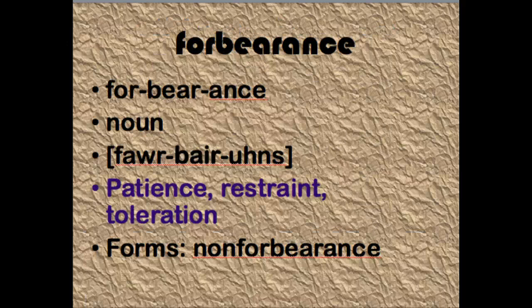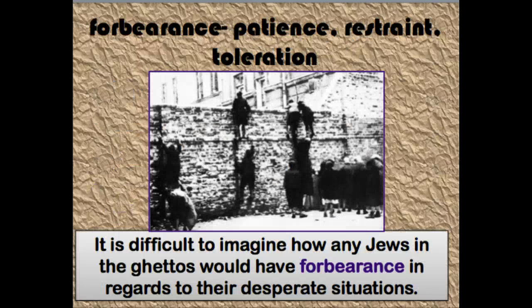Our third word is forbearance. Someone with forbearance has patience and great restraint, meaning they hold back even when they might be angered or impatient. It also represents a great deal of toleration someone might have for inequalities or how they're being treated. It is difficult to imagine how any Jews in the ghettos would have the forbearance in regards to their desperate situations.